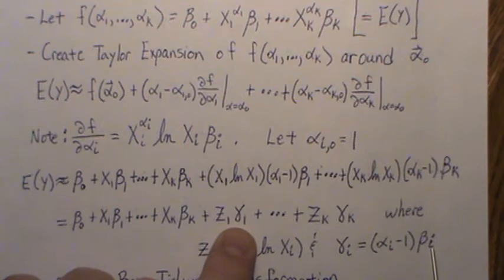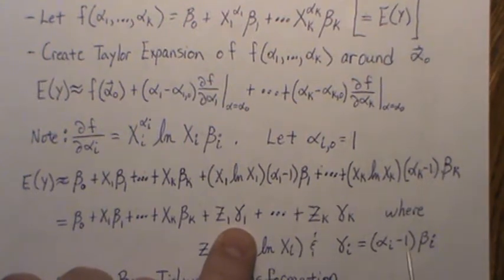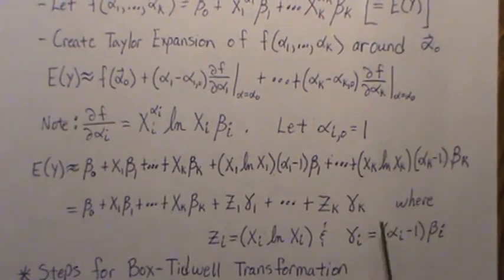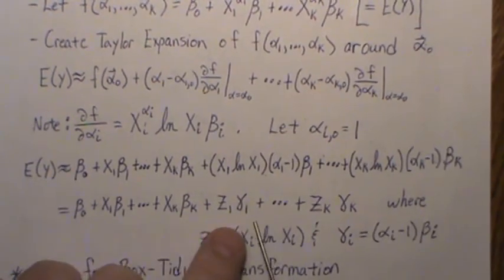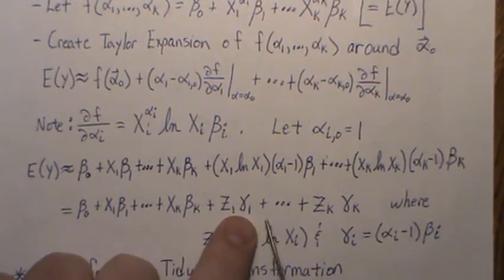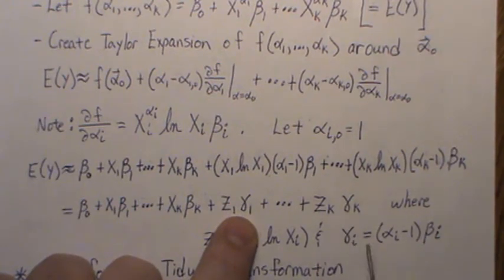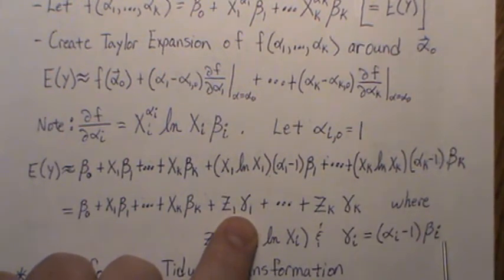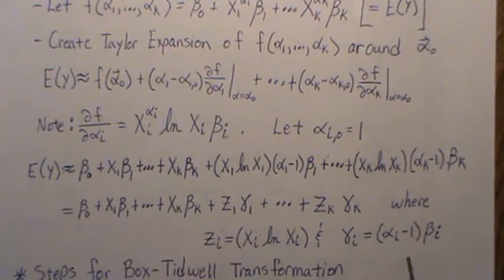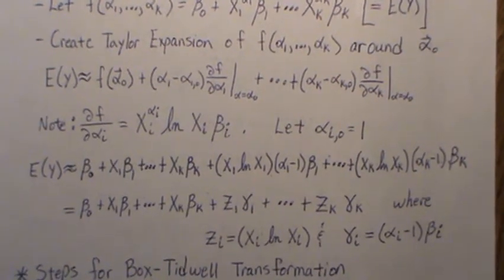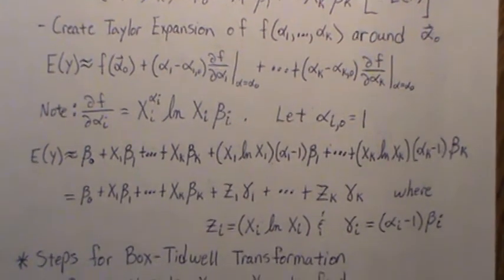So now what we want to do is of course estimate the betas, estimate the gammas. And if we have an estimate for the gammas and an estimate for the betas, then we can come up with an estimate for alpha. And that's actually the goal of the Box-Tidwell transformation.